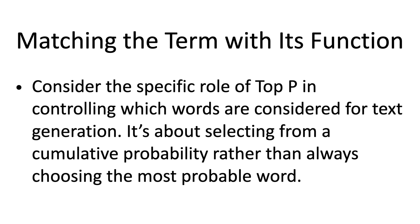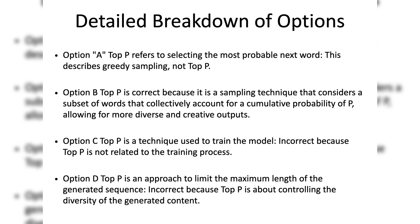Now match the term with its function. Consider the specific role of top P in controlling which words are considered for text generation. It's about selecting from a cumulative probability rather than always choosing the most probable word.